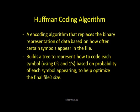We also have the Huffman coding algorithm that we will talk about today. It's also an encoding algorithm that replaces the binary representation of data based on how often certain symbols appear in the file. And, to do this, it builds a tree to represent how to code each symbol using ones and zeros based on the probability of each symbol appearing to help optimize the final file size.